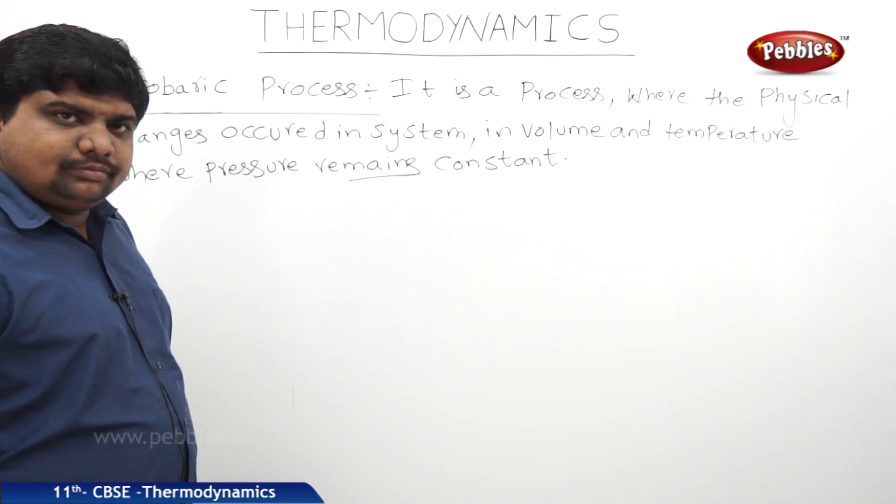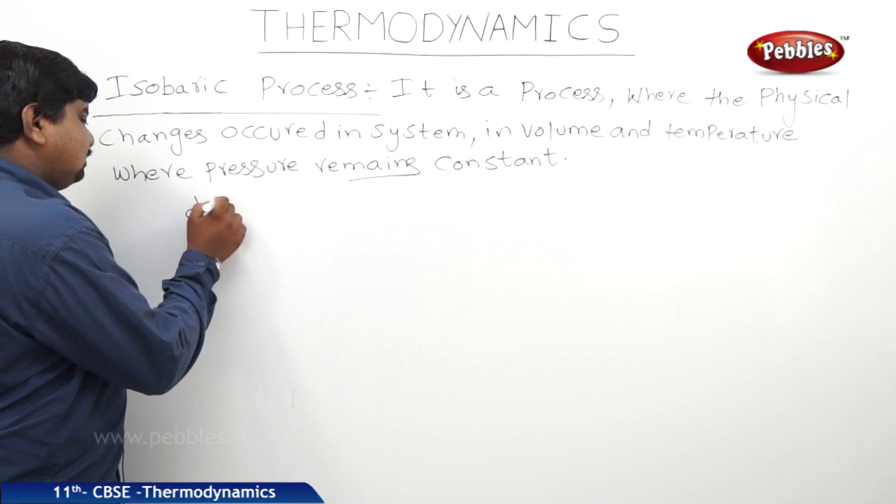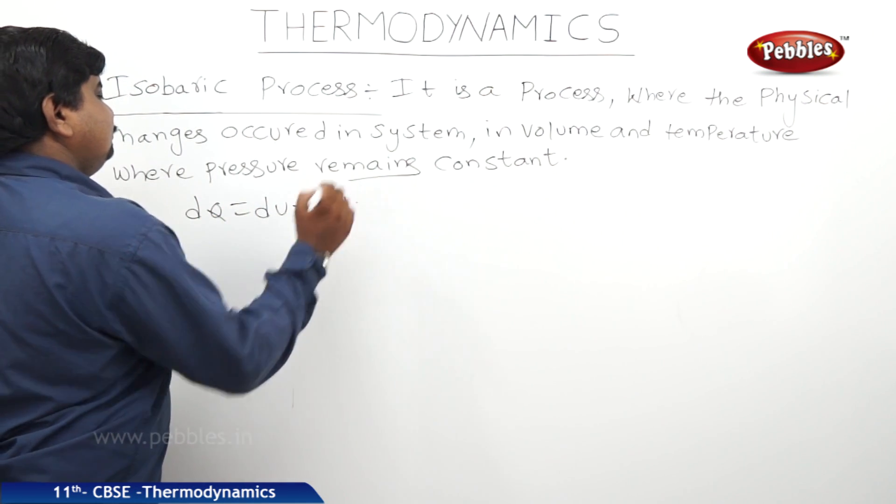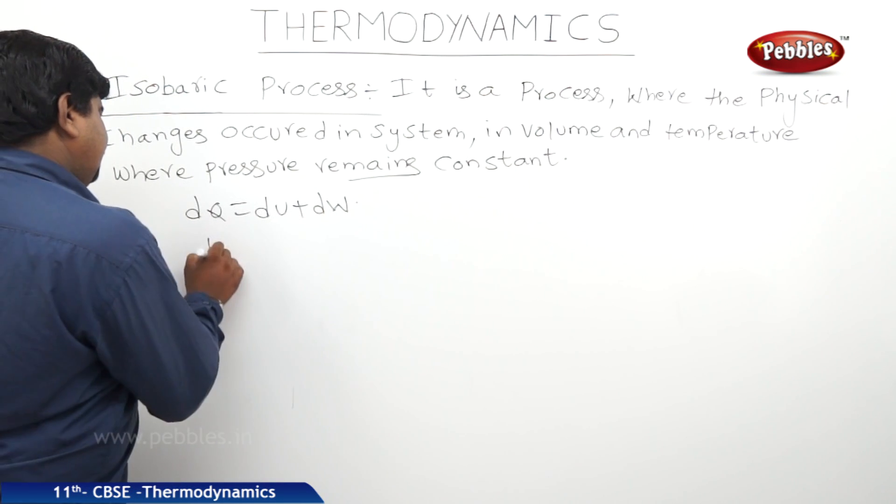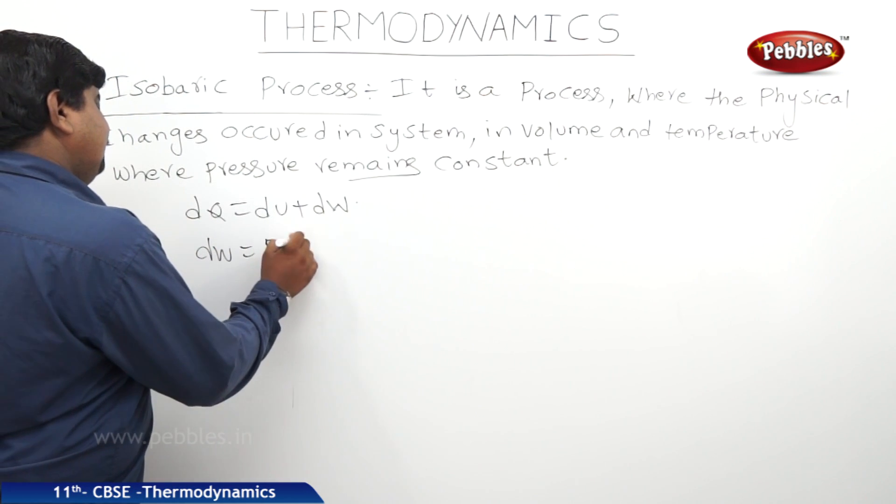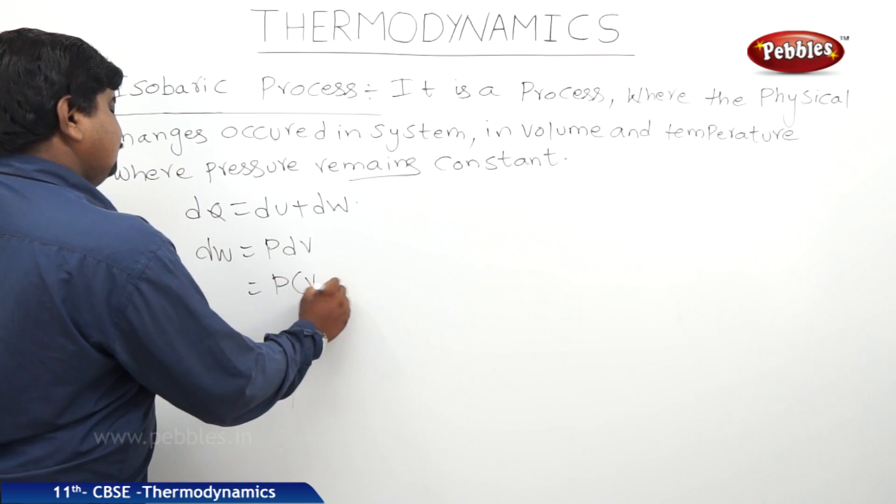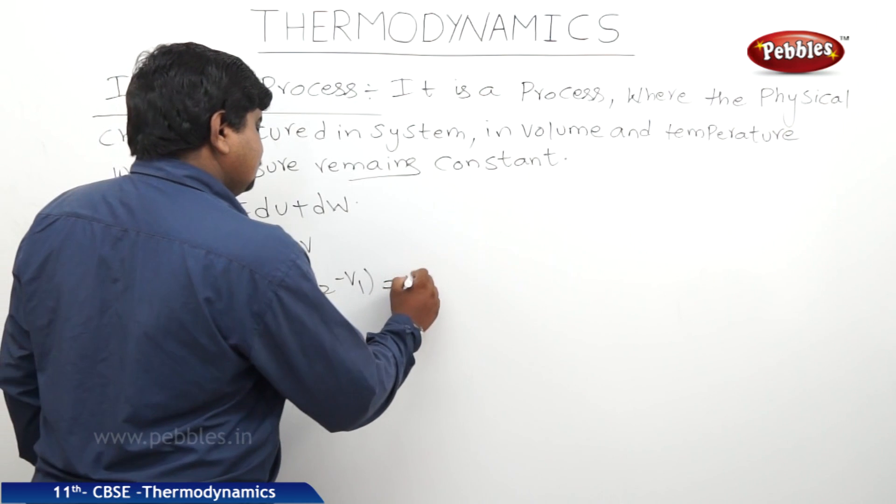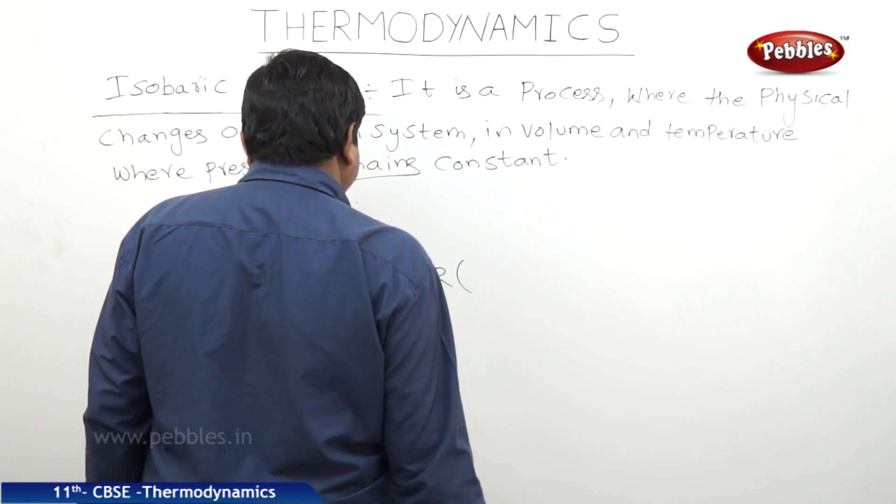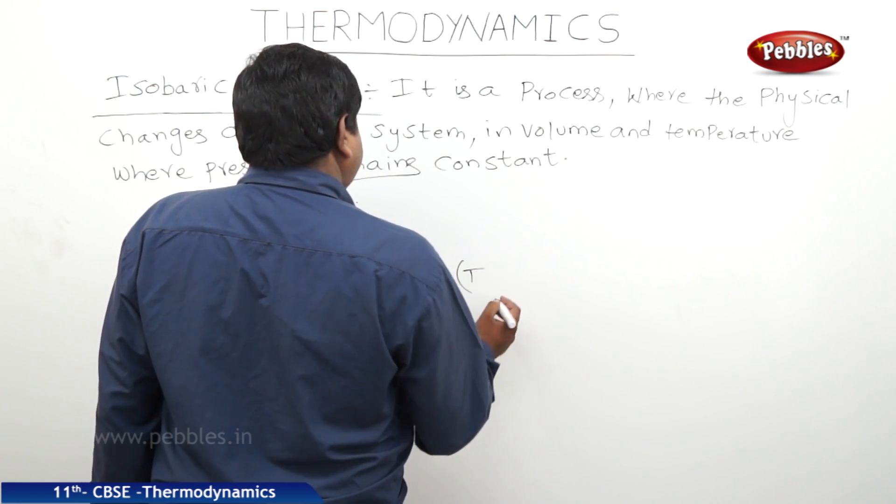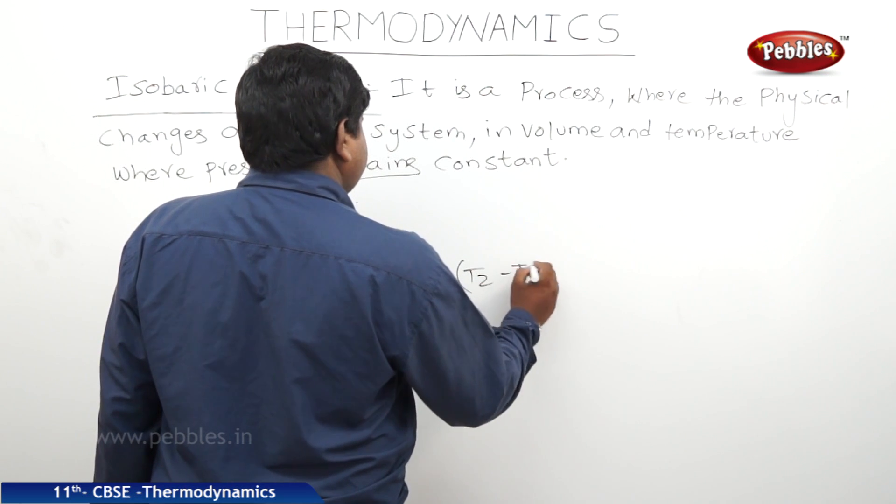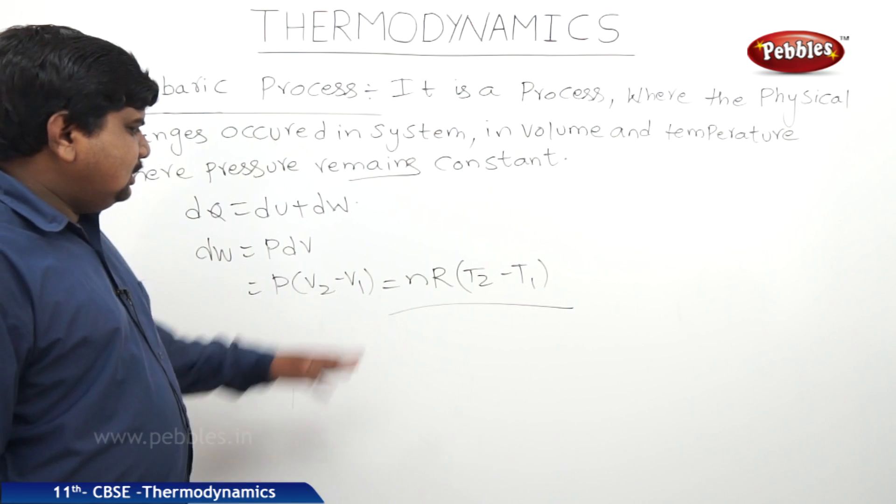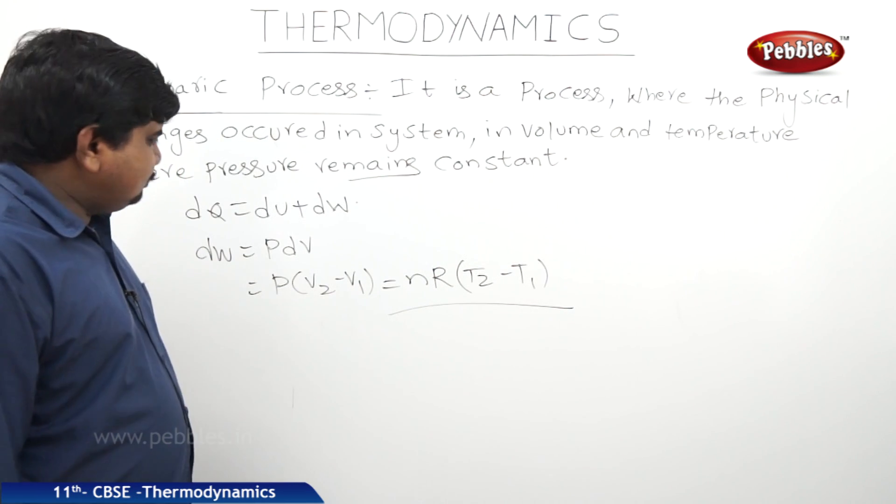According to the first law of thermodynamics, dQ equals dU plus dW, where dW equals PdV. Therefore, it is P times (V2 minus V1). This P(V2 - V1) is also equal to nR(T2 - T1) because PV equals nRT. So the work done is nR(T2 - T1).